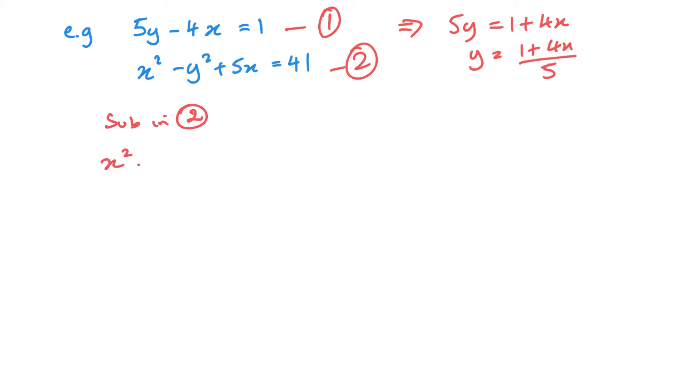And then we have x squared minus 1 plus 4x over 5 squared plus 5x equals 41. Now this doesn't look very nice. There's a couple of ways you can approach it. So I can split it up to 1 fifth plus 4 fifths and then do my expanding. Or I can square the top and square the bottom and then obviously expand my top, which is the way I'm probably going to do it here. So let's go x squared minus 1 plus 4x squared over 25 plus 5x equals 41.